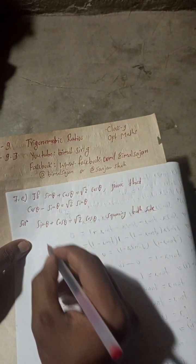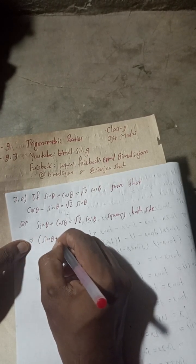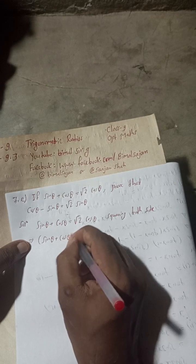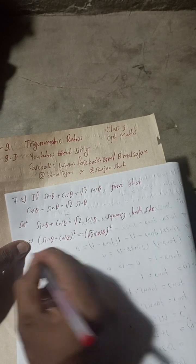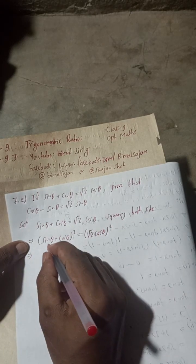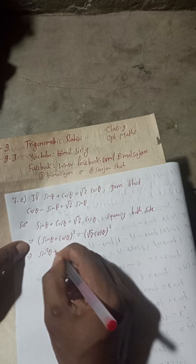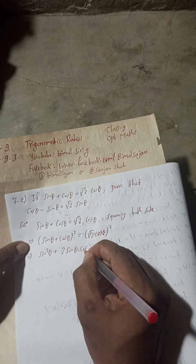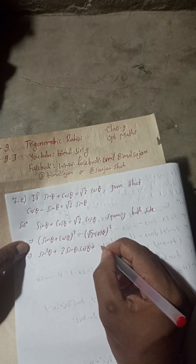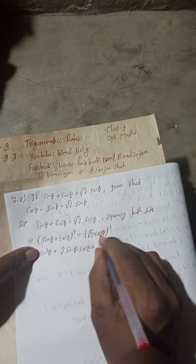Now I will square both sides. Squaring means: (sin θ + cos θ)² = (√2 cos θ)². This implies sin²θ + 2 sin θ cos θ + cos²θ = (√2 cos θ)², which is 2cos²θ.